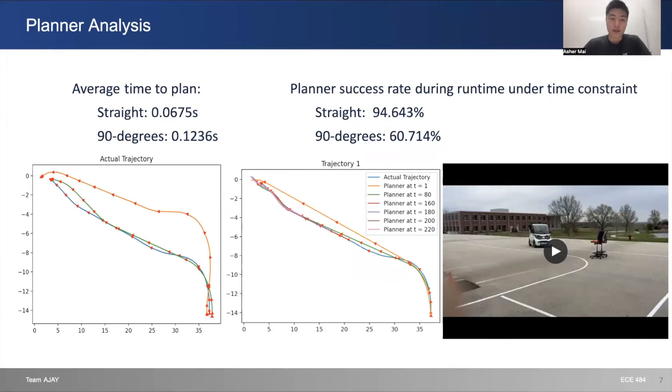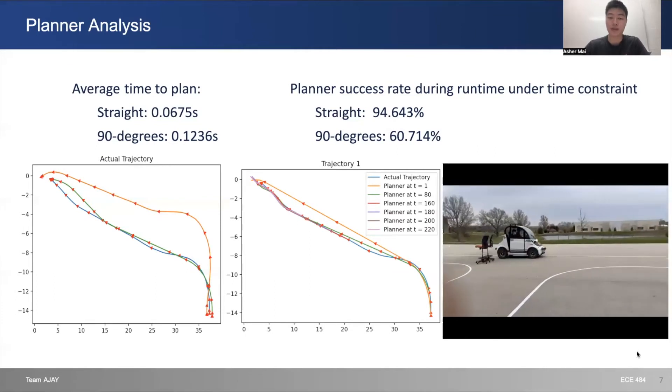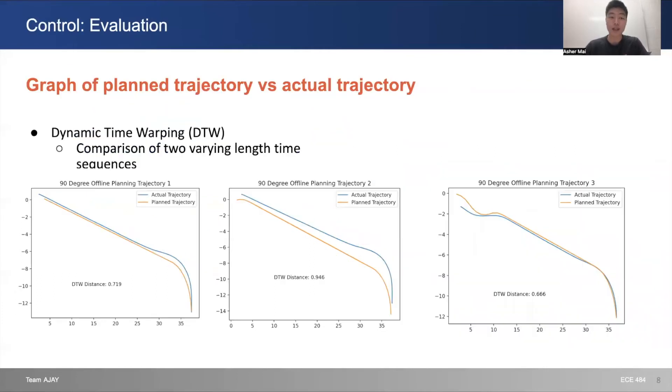On the bottom left graph, we have three of our runs recorded by GPS data. In the middle graph, this is the first trajectory. We can see that compared to the planner at different time steps, the actual trajectory in blue follows pretty well compared to the planned trajectory. This is one of our metrics to see how well our controller behaves.